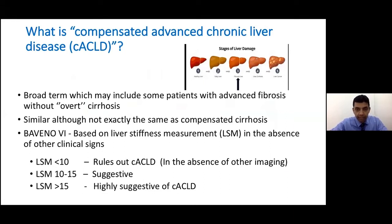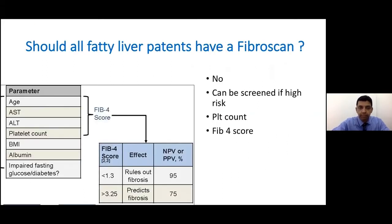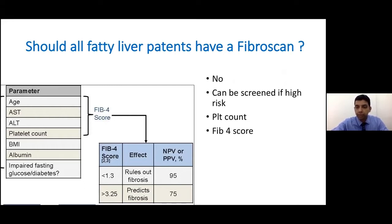According to Baveno 6, liver stiffness less than 10 rules out compensated advanced chronic liver disease, more than 15 highly suggests it, and 10 to 15 is suggestive. Not all patients with fatty liver need a FibroScan. We have simpler tests like FIB-4, calculated from basic blood tests and usable on a smartphone, which can either rule out advanced fibrosis or, if values are higher, prompt referral for a FibroScan.